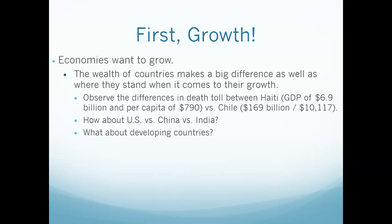GDP is a dollar value measuring the value of everything we're producing within our economy, our country, our society. And oftentimes when we're measuring standard of living, we'll use GDP per capita — how much are we making on a per-person basis? We could have a large GDP, but if we also have a lot of people — like China with 1.3 billion people — you divide it up amongst a lot of people and it doesn't look nearly as impressive on a per-person basis.